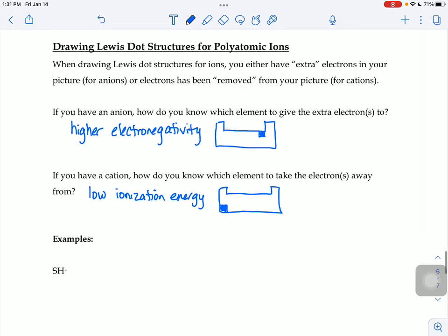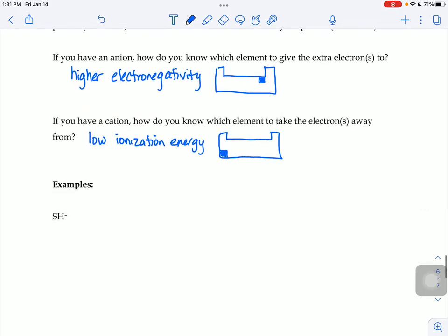So let's look at this example, SH-. So S, by itself, would have six electrons. It's in the 6A family. And H would have one valence electron.